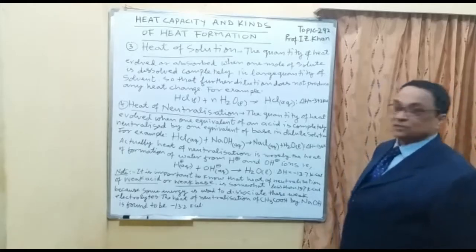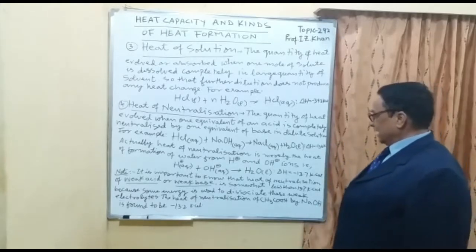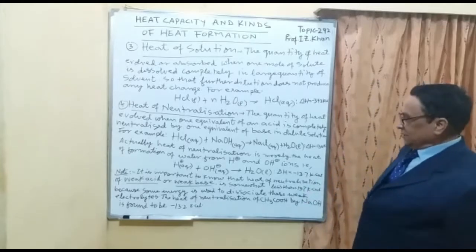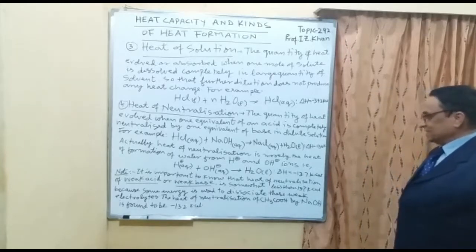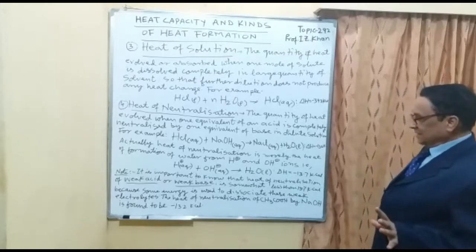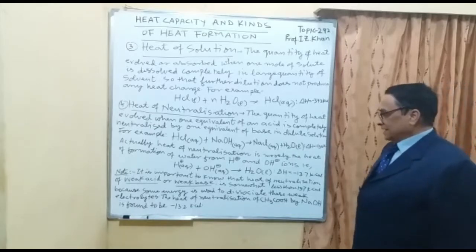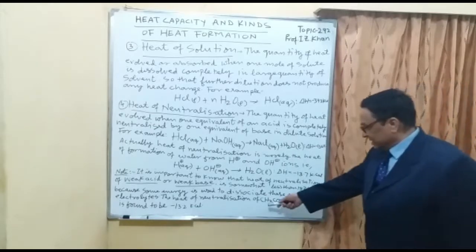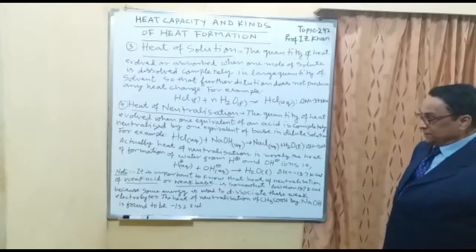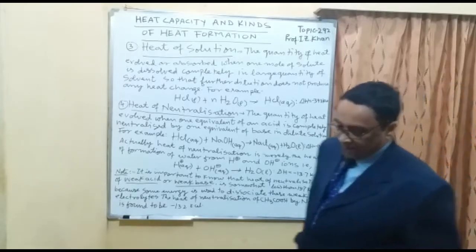It is important to note that the heat of neutralization of a weak acid or weak base is somewhat less than 13.7 kilocalories, because some of the energy is used to dissociate these weak electrolytes. For example, acetic acid — a weak acid — neutralized by sodium hydroxide, a strong base, gives minus 13.2 kilocalories per mole.